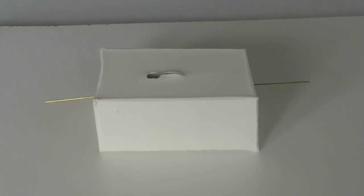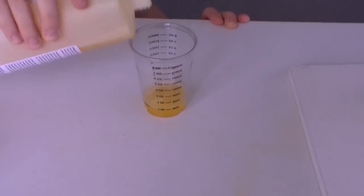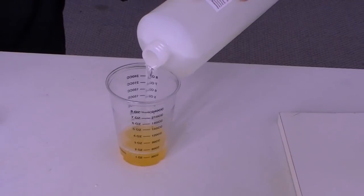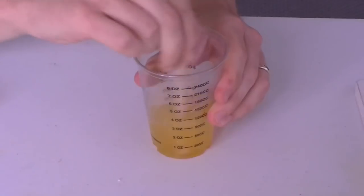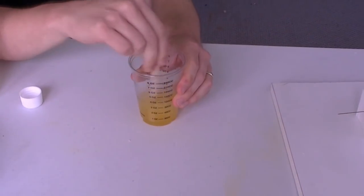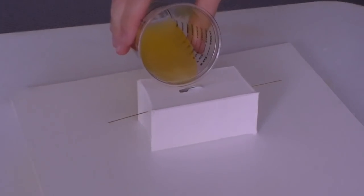Now pour out the required amounts of part A and B of the resin and stir well. Pour the mixed resin into the pouring hole in the mould.